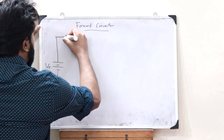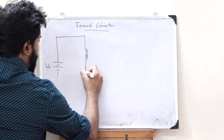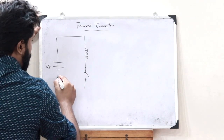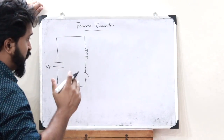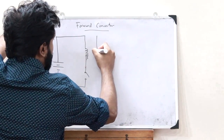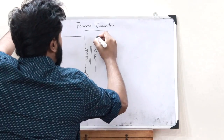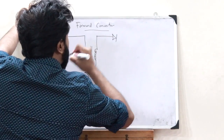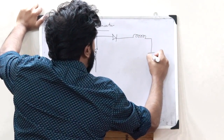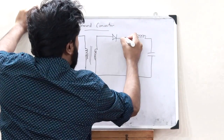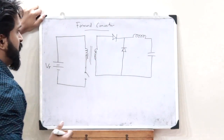This voltage source is then connected to the primary winding of a particular transformer, which is then connected to a particular switch, completing the circuit. Where there is a primary winding, there must also be a secondary winding. This transformer is then connected to a particular diode, which is then connected to an inductor. A capacitor completes the circuit, and a particular diode is also provided here.